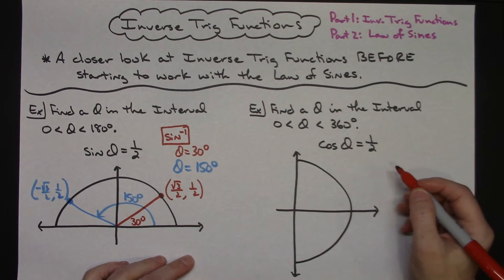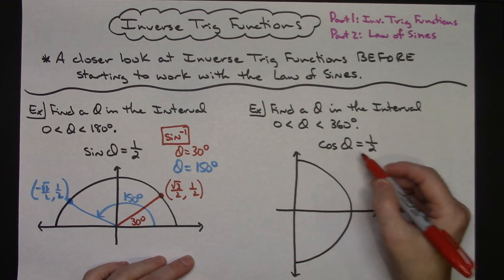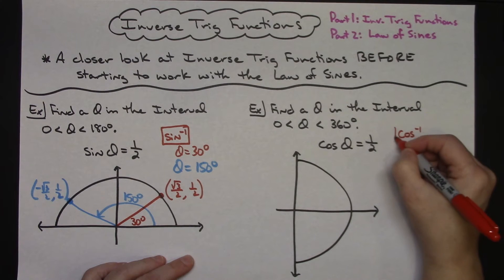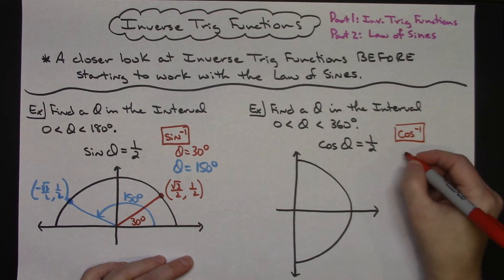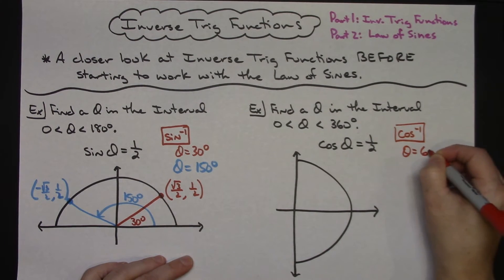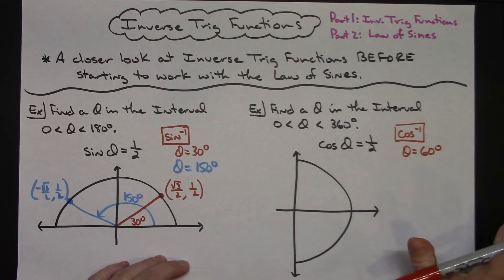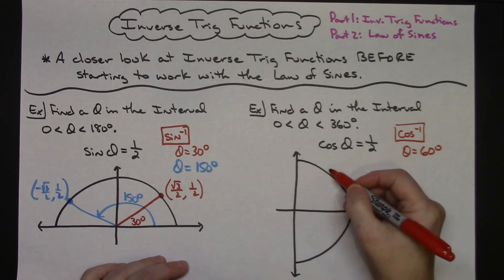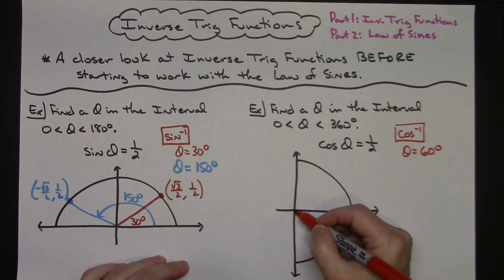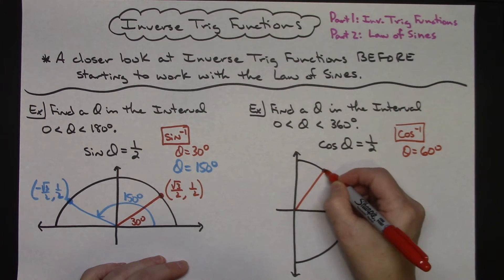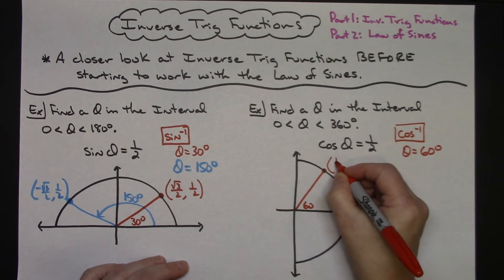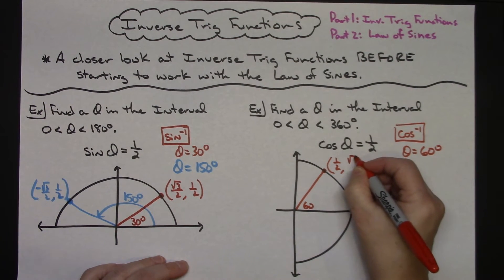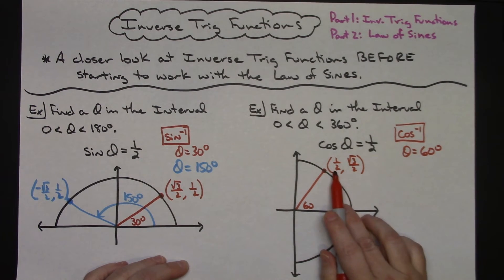The first thing students will do is grab their calculator and use the inverse cosine button, which will return a value of 60 degrees, and that is correct. In the first quadrant at 60 degrees, the ordered pair is one half and square root of 3 over 2 from the unit circle, remembering that the first coordinate is cosine.